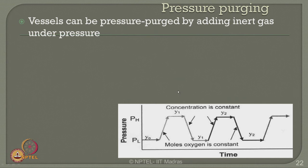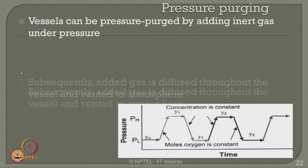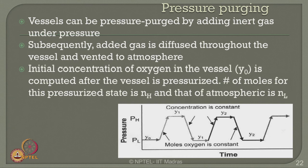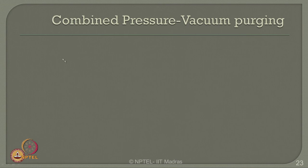One can also do pressure purging. In this case, from the lower pressure value the pressure is increased, with concentration changing from Y naught to Y1 and so on. While increasing pressure, moles of oxygen are kept constant. Vessels can be pressure purged by adding inert gas under pressure; subsequently the added gas diffuses throughout the vessel and is vented to atmosphere. The initial concentration of oxygen Y naught is computed after the vessel is pressurized. The number of moles for the pressurized state is N_H and for atmospheric is N_L.